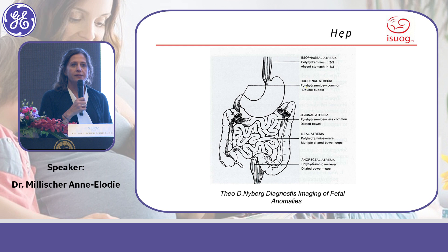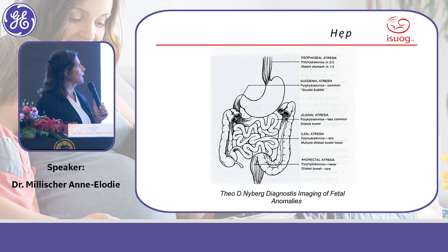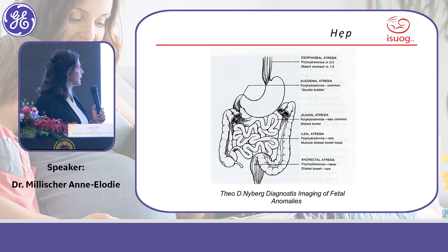First, let's talk about atresia. As you can see on this picture, atresia can occur at any level of the digestive tract — we can have esophageal atresia, duodenal atresia, jejunal atresia, and all the way to the end of the rectum where we can encounter anorectal atresia.